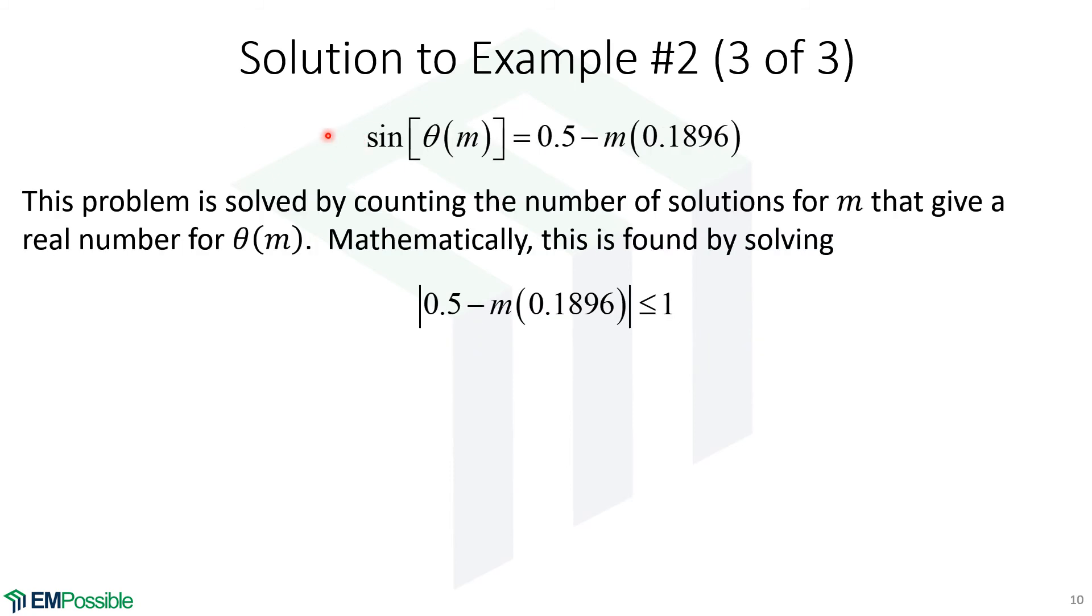So we start with the equation from the previous slide. And in order to have this angle be real numbers, that means the argument on the right, the magnitude of that, has to be less than or equal to 1. So mathematically, this is the equation that we will solve. And as long as this is satisfied, any value of m that satisfies this will count as a diffraction order.